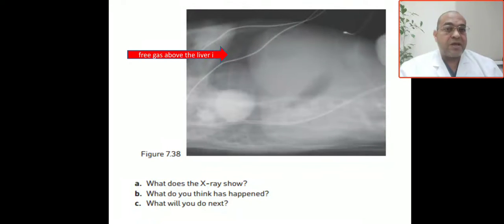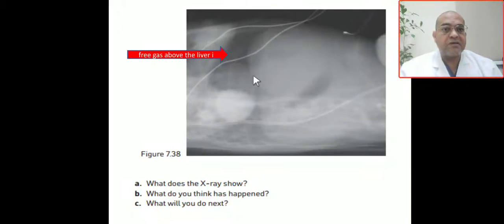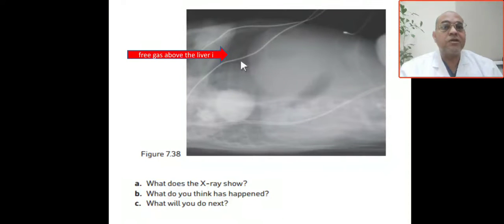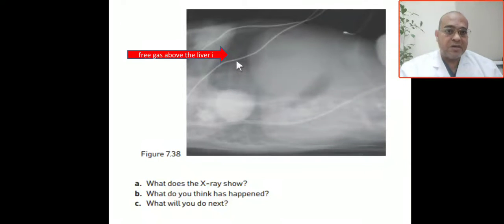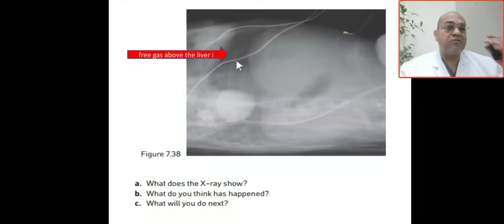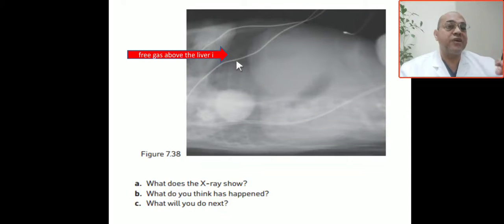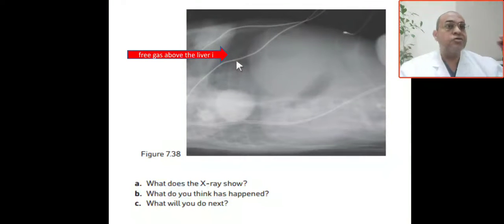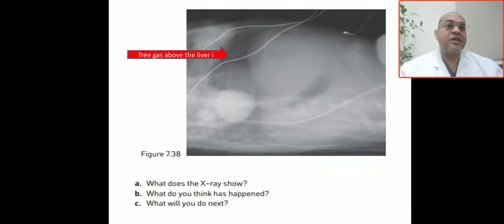What you do next depends on the condition of the patient. On this lateral X-ray, you can see free air under the diaphragm — hyperlucent area or air under the diaphragm or above the liver. Any free gas under the diaphragm or above the liver indicates pneumoperitoneum, indicating intestinal perforation.